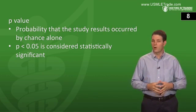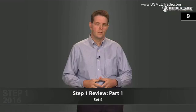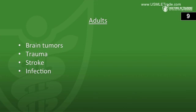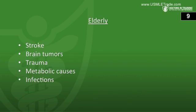Next: a patient with an epilepsy diagnosis is pregnant. She's concerned her child may also have seizures. The most common causes of seizures in children include genetic causes, febrile seizures from infection, trauma, and metabolic causes. In adults, the main causes are brain tumors, trauma, stroke, and infection. In the elderly, it's a slightly different order: stroke, brain tumors, trauma, metabolic causes like hyponatremia, and then infection.